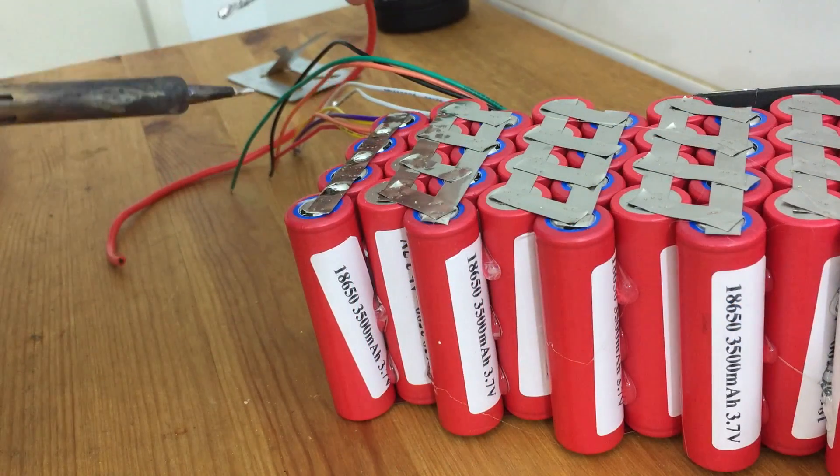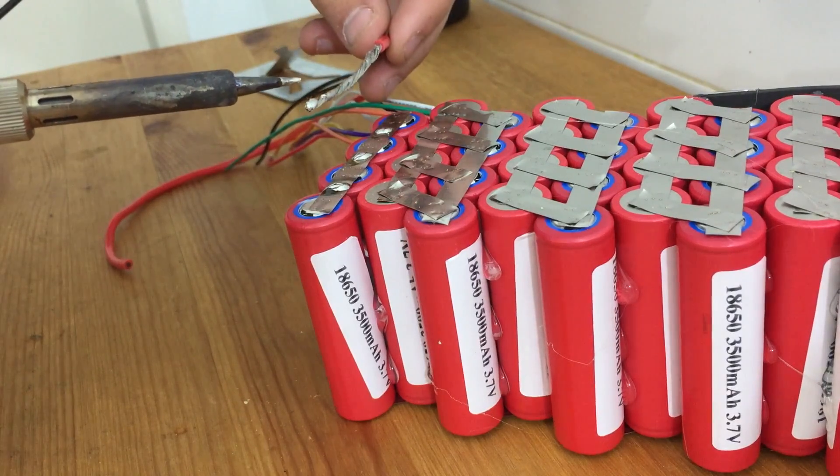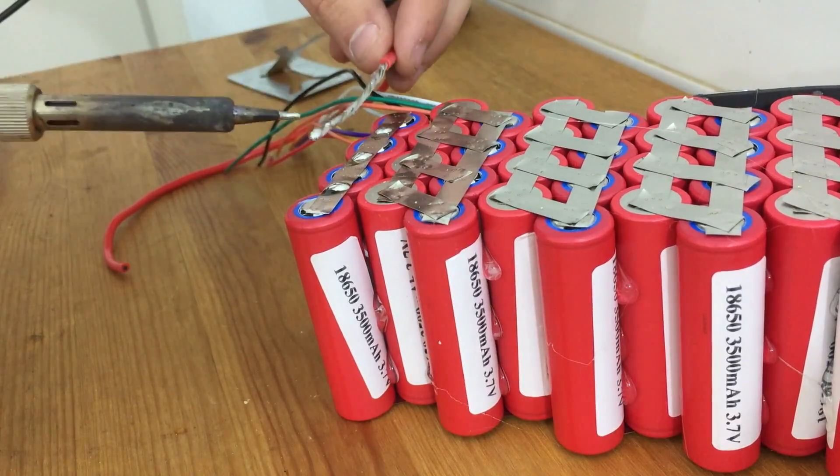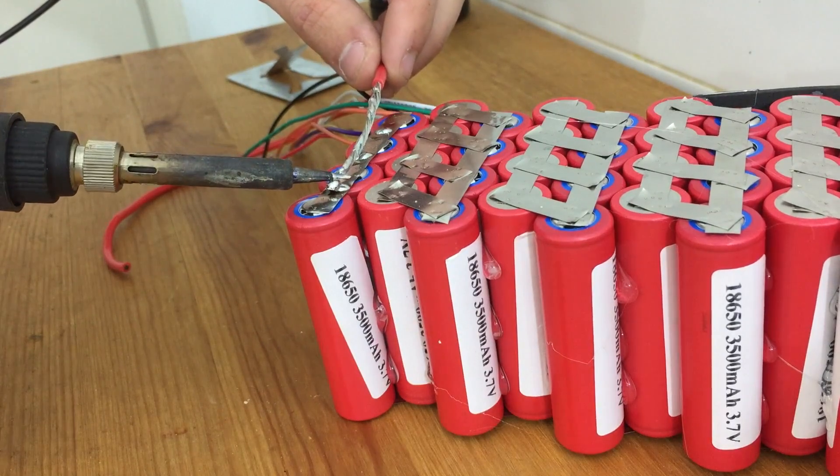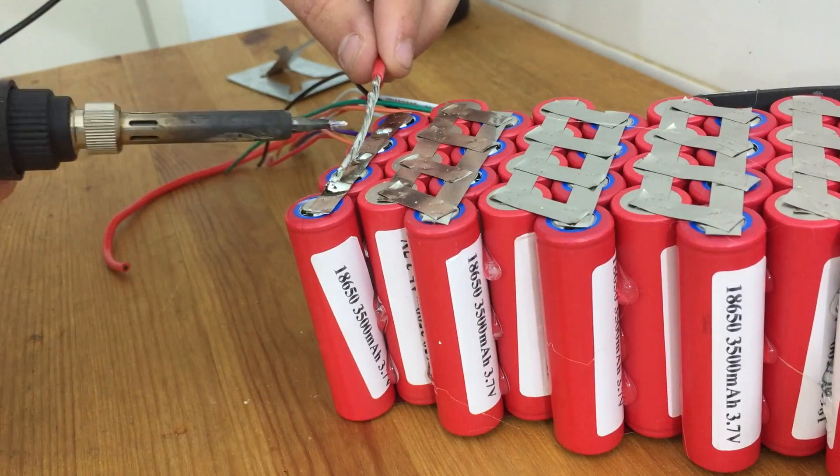Next, I'm going to solder a piece of 14-gauge silicone wire onto the positive end of the battery. This would be the positive end of the 10th cell group in just the same way. Again, I'm going to solder in between the cells so that I spend as little time soldering on the cells as possible.